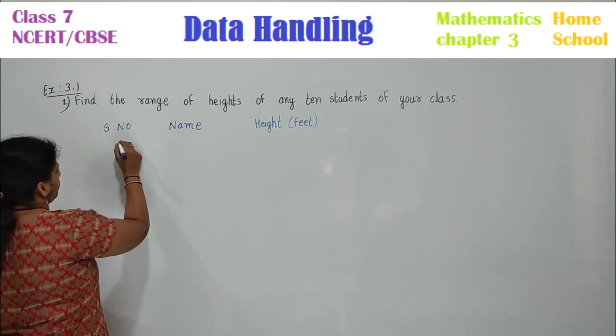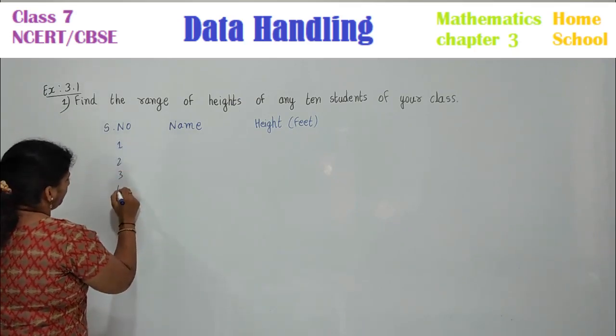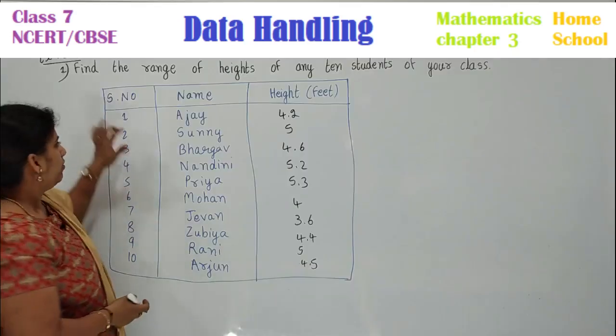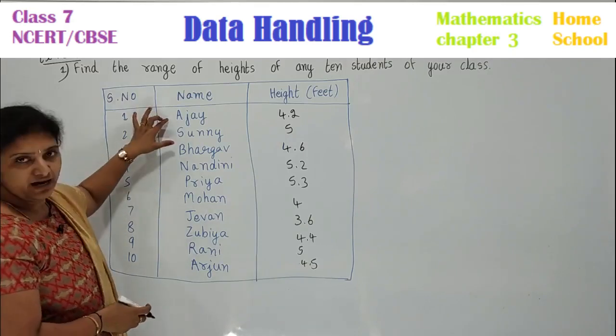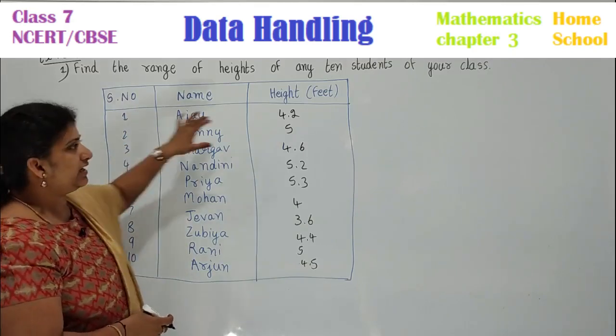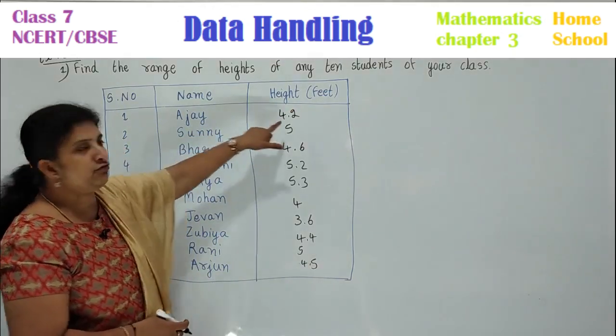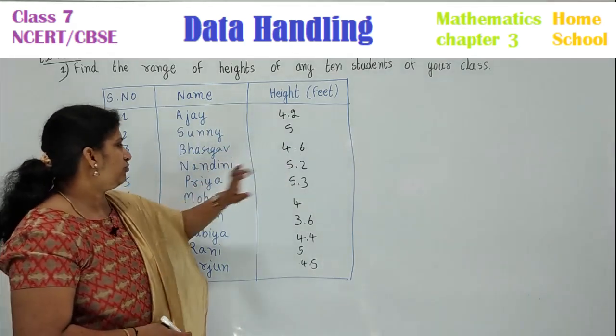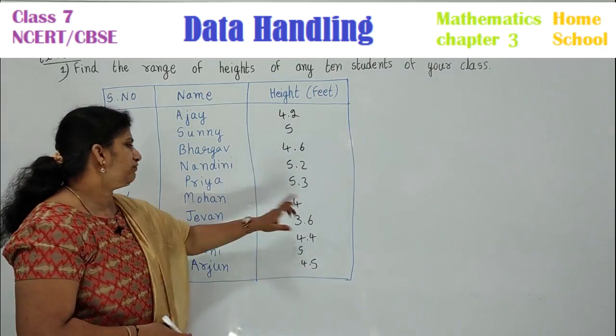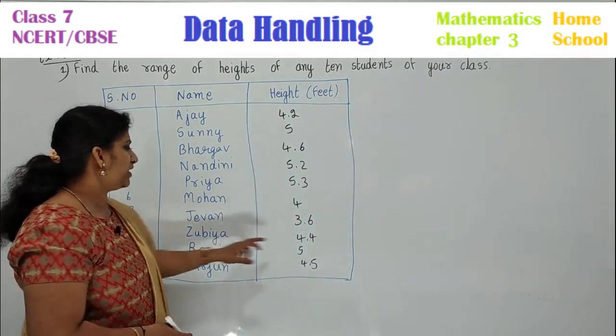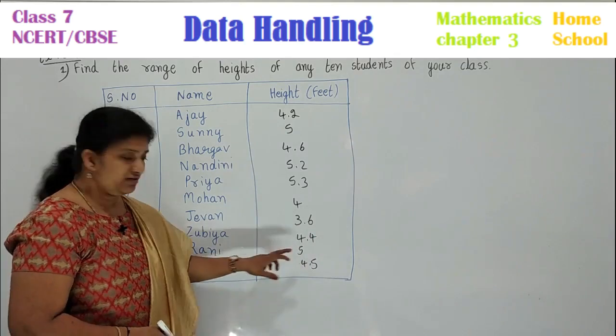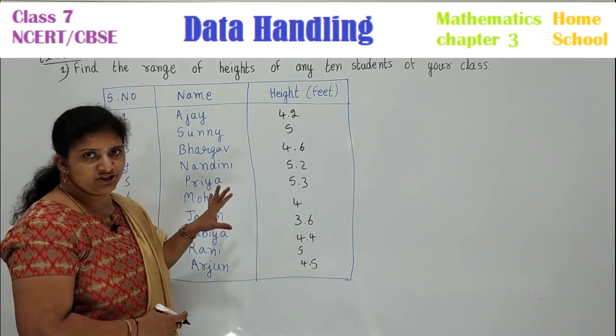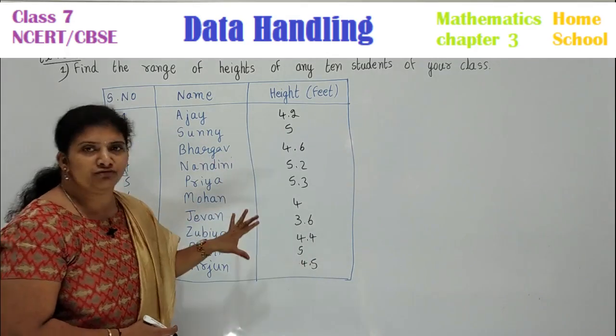let us take 1, 2, 3, 4, 5, 6, 7, 8, 9, 10 students. I have taken their names and collected their height in feet. Ajay 4.2, Sunny 5 feet, Bhargav 4.6 feet, Nandini 5.2 feet, Priya 5.3 feet, Mohan 4 feet, Jeevan 3.6 feet, Zubia 4.4 feet, Rani 5 feet, Arjun 4.5 feet. Like this, I have taken some information and represented it in the form of a table.